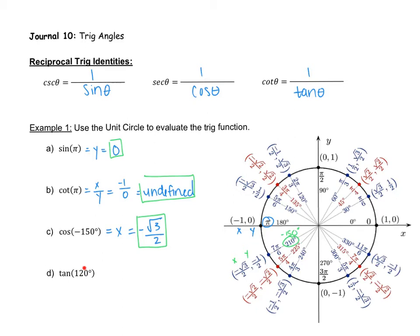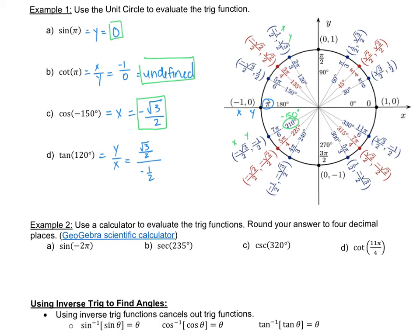For tangent of 120 degrees, it's positive so we go counterclockwise. At 120, my x and y values are there. Tangent is y over x, so I have root three over two for y and negative one half for x. To divide fractions, take the denominator, flip it, and multiply straight across — that's two over one. The twos cancel, leaving root three over one, which is just root three. So tangent of 120 degrees is negative root three.